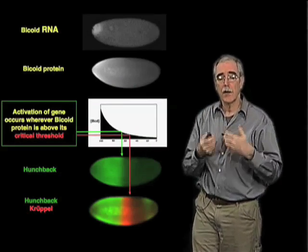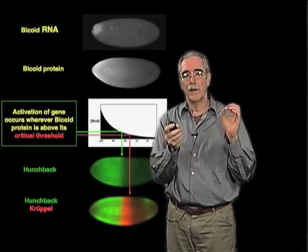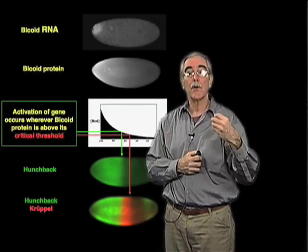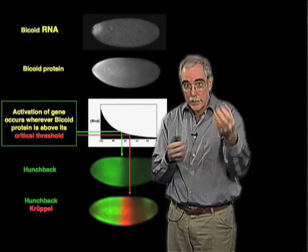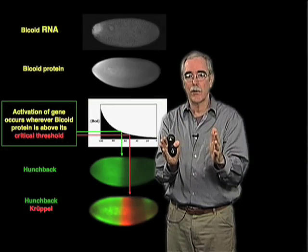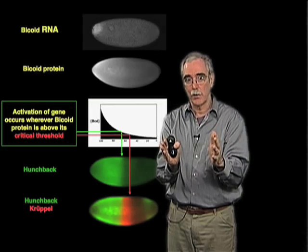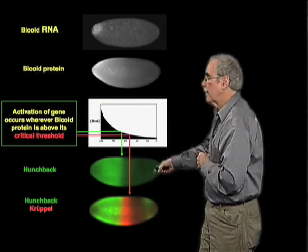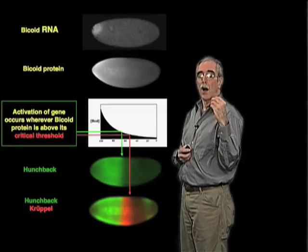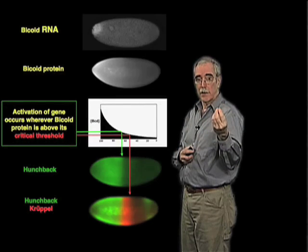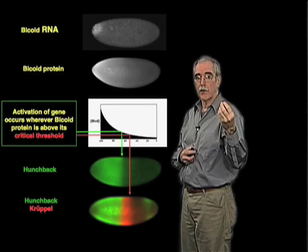This is a transcription factor, and there are genes in the embryo that are going to become transcriptionally active at this time. This is the stage where major transcriptional activation occurs, and those genes are activated by Bicoid as a transcription factor in a concentration-dependent way.